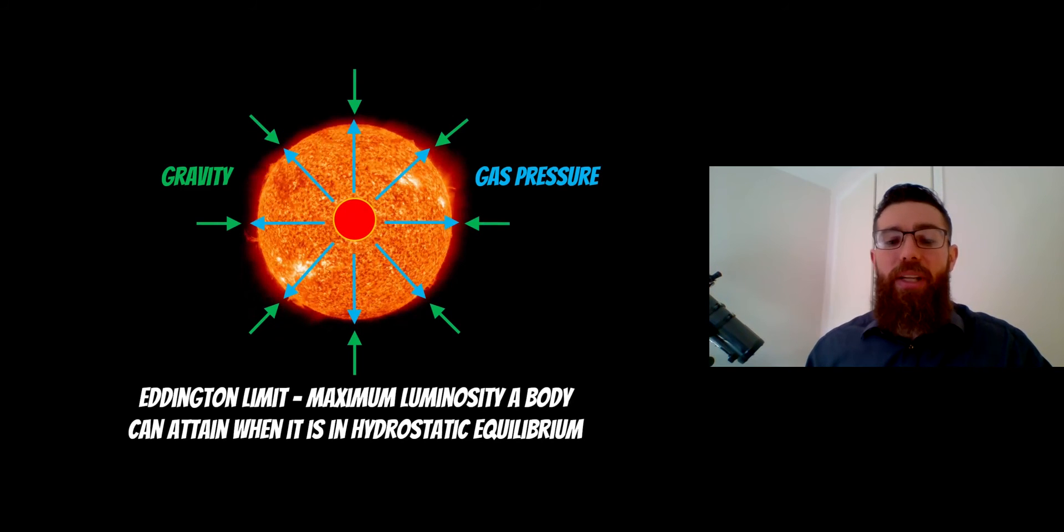Now the Eddington limit is when a star is at that limit where it's in hydrostatic equilibrium. So the definition of it would be the maximum luminosity a body can attain when it is in hydrostatic equilibrium. So if you were to increase that pressure any more then the star would actually expand and it would pretty much blow its outer layers apart.